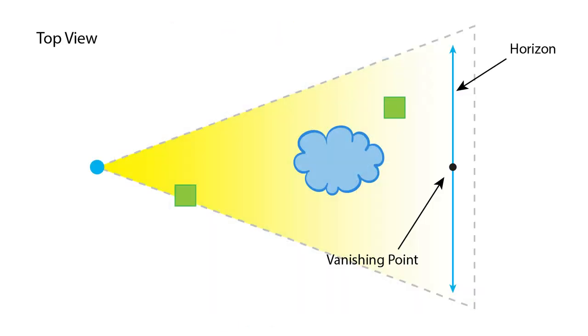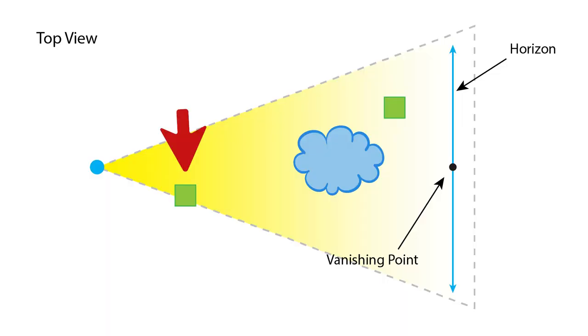Alright here's a diagram showing the top view of a very basic scene. This is our viewer looking at two green blocks and a cloud. Exciting right? Okay one block is close to the viewer off to the right. The other one is placed in the distance on the left and the cloud is floating somewhere in the middle.